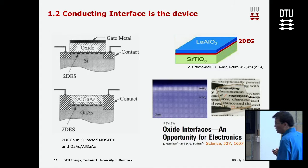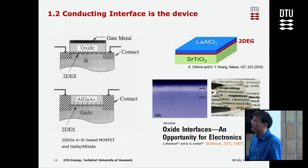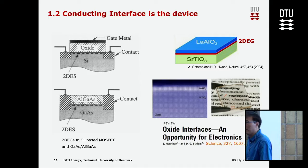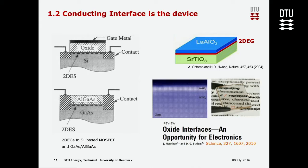When we think about building a device, we want to build the most simple and most useful device. If we look at semiconductor technology, the transistor — the building block of the electronic device — is based on a conducting interface called the two-dimensional electron gas.